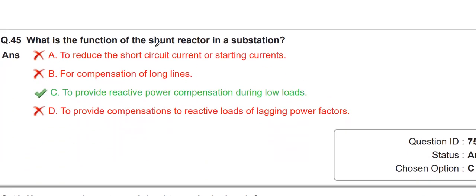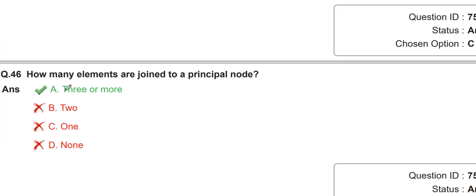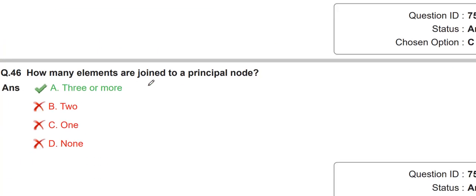What is the function of a shunt reactor in a substation? A shunt reactor provides reactive power compensation during low loads. Also, how many elements are joined to a principal node? A principal node has three or more than three elements joined.